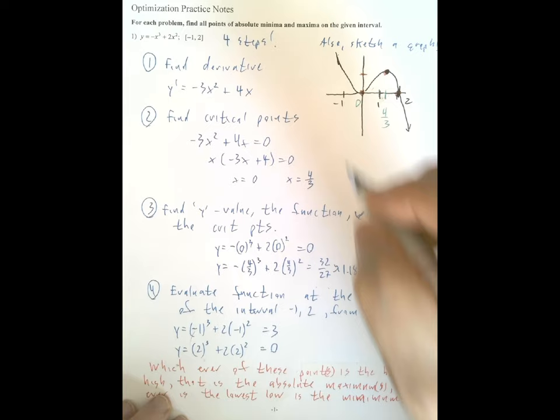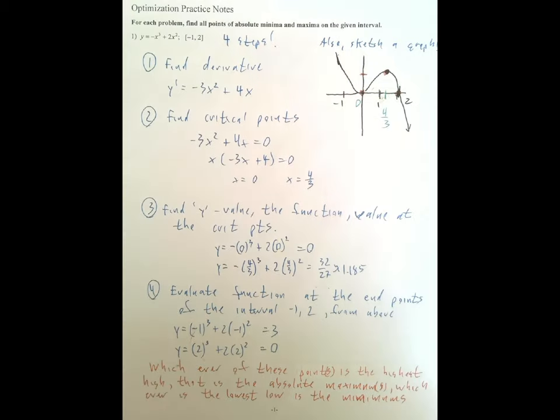You're going to evaluate the function at the endpoints of the interval at -1 and 2. You can see that I've done that at the bottom. At x = -1 the y is 3, and at x = 2 the y value is 0. It says at the bottom, whichever of these points is the highest high or the lowest low, those are the maximums. If more than one x value has the same max or the same min, then they would be absolute minimums and maximums.